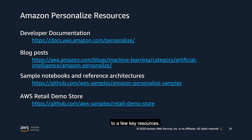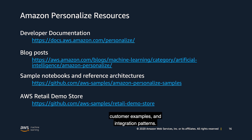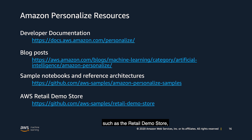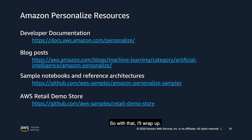Before closing out this introductory episode, I wanted to leave you with links to a few key resources. The Personalize developer documentation includes detailed information on how to use Personalize and the Personalize APIs. We also regularly publish blog posts that go into detail on new features, customer examples, and integration patterns. We have several resources available on GitHub that will walk you through using a feature or deploying a reference architecture. Finally, we have some complete end-to-end demos, such as the retail demo store, that you can deploy into your AWS account to see how a full-stack integration with Personalize can be built. Since AWS is constantly adding new features and improvements to Personalize, periodically checking in on the latest in the developer docs, the Personalize blog, and GitHub resources is a great way to stay connected with the service.